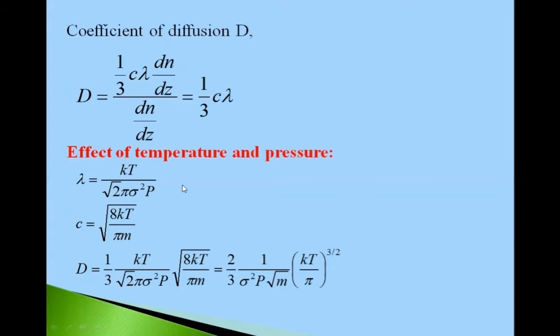Now we will see effect of temperature and pressure on this coefficient of diffusion D. You know lambda is equal to KT upon root 2 pi sigma square P and C is under root 8 KT upon pi M. This is the velocity of molecules, this is mean free path.